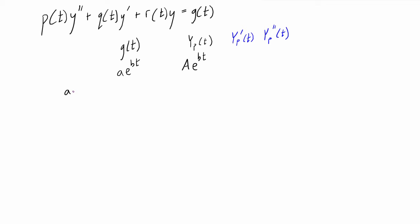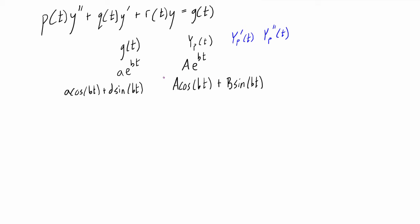The second family of g of t's that this works for is cosines and sines. If we have something like a cos of bt plus d sine of bt, then we assume the particular solution has the form capital A cos bt plus capital B sine bt, where A and B are two undetermined coefficients. We take the derivative once, take the derivative twice, plug everything into the original differential equation, and we get sines and cosines on both sides. We simplify and solve for A and B, then plug those values back in to get the particular solution.